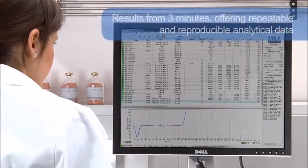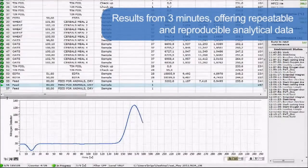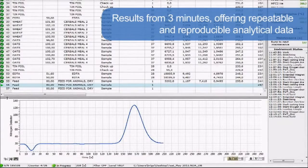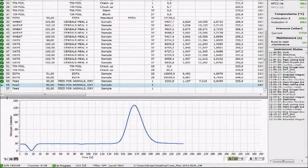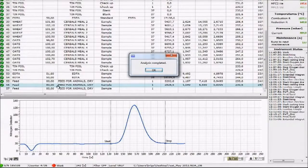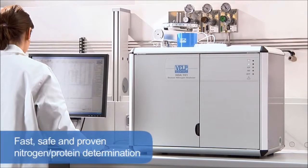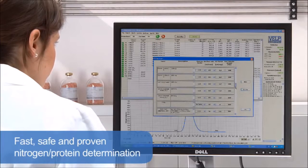The analysis time starts from 3 minutes, offering repeatable and reproducible analytical results on several types of samples with no matrix effect in the determination of nitrogen. To increase the precision and accuracy, all the gases are tested. The NDA701 has no requirement for hazardous chemicals, providing fast, safe, and proven nitrogen and protein determination.